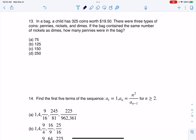Hey everyone, let's take a look at our next multiple choice question. So it says, in a bag, a child has 325 coins worth $19.50. Just offhand, I think that's a lot of coins to only have about 20 bucks. But okay.